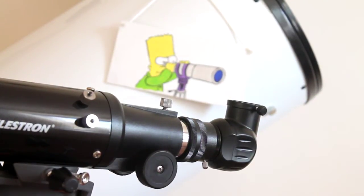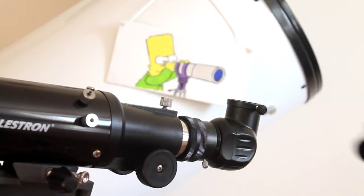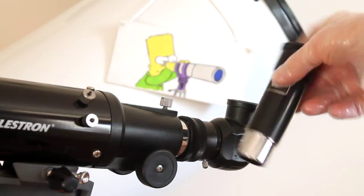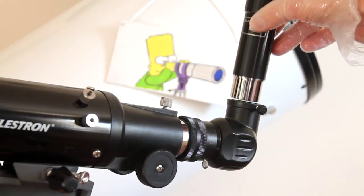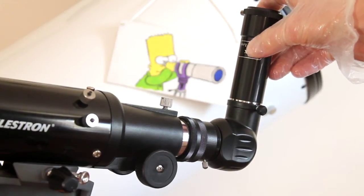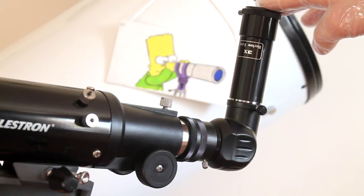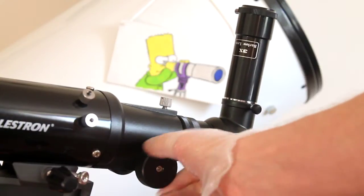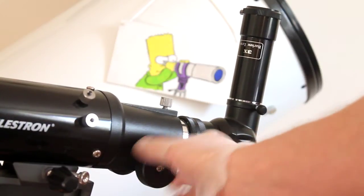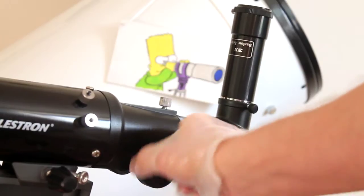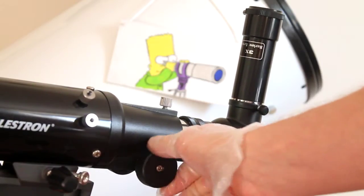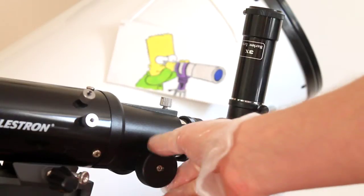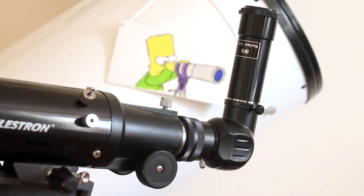But problems arise when you use the Barlow lens. Celestron mainly uses this long tube one, so you put it in there and place your eyepiece in, and no matter how you try, you cannot get focus. There's not enough inward travel. So you have to ask why that Barlow lens is included in the first place. I don't know, but there are a couple of solutions.